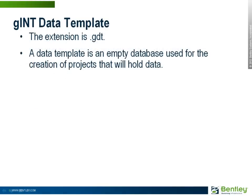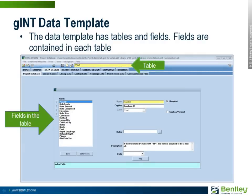First is the GINT data template, with a file extension of .gdt. A data template is an empty database used for the creation of projects that will hold data — it does not hold data itself, and you cannot open it using GINT or enter data into it. Here in data design, a data template has tables and fields, with fields contained in each table. Being a database, it has a database structure with rules held within these tables and fields. Here in the Point table, there are several fields.